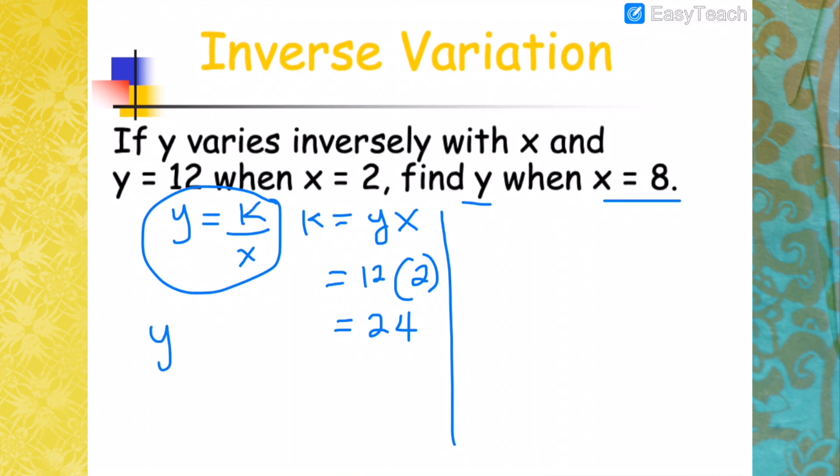So using this original form, you will have Y equals K, which is 24, divided by X, which is 8. Therefore, Y, 24 divided by 8, would be 3.